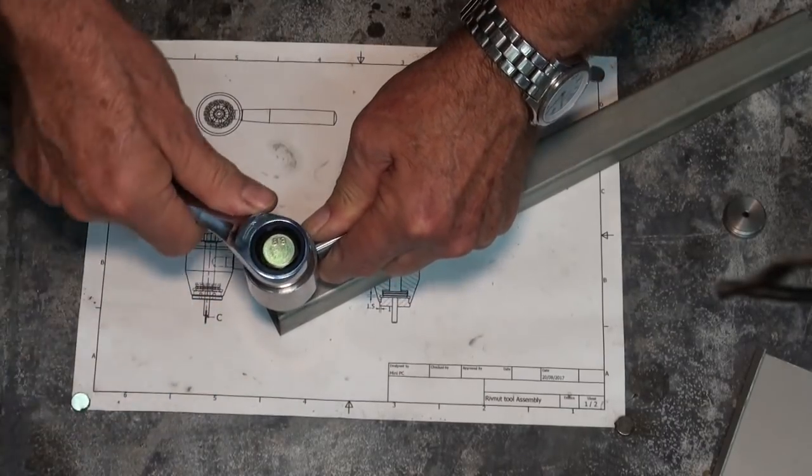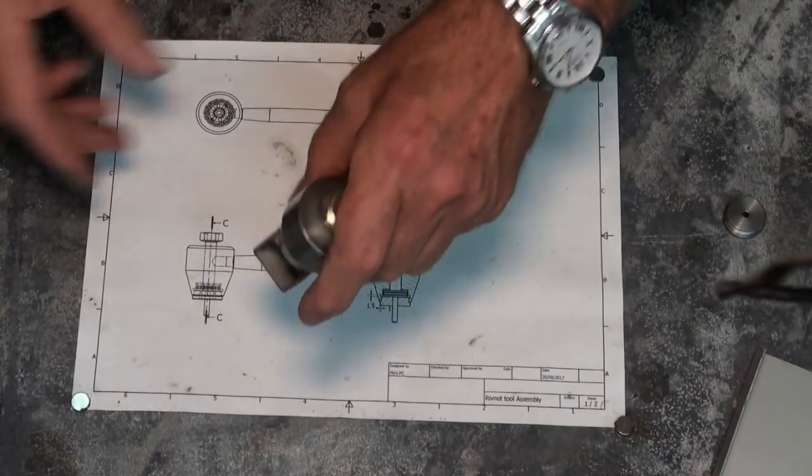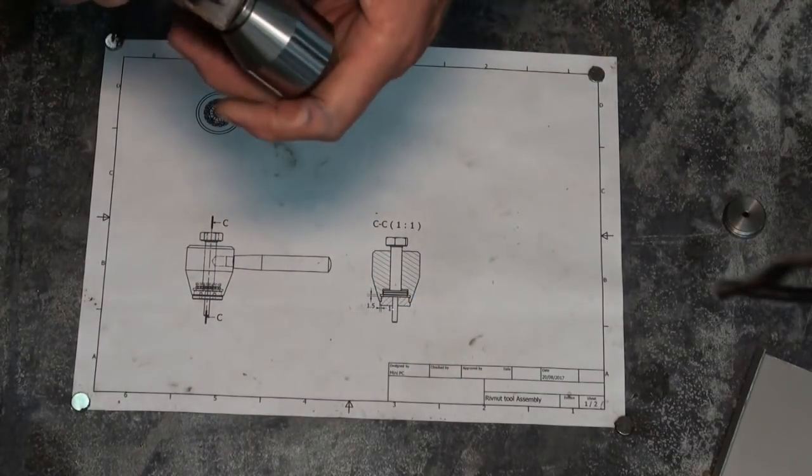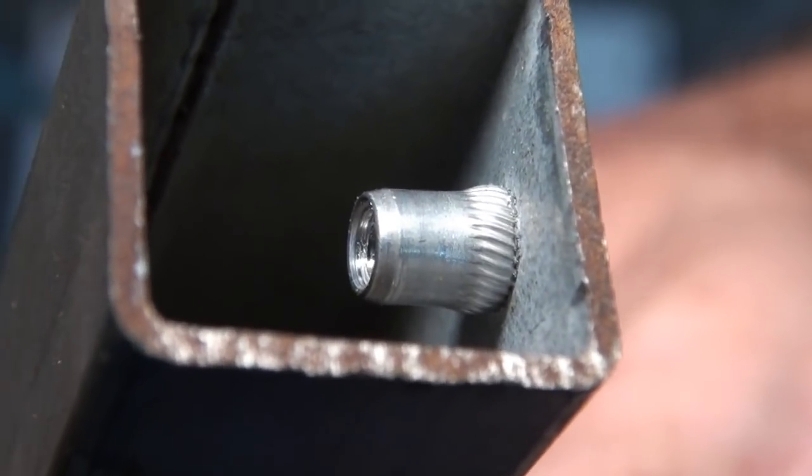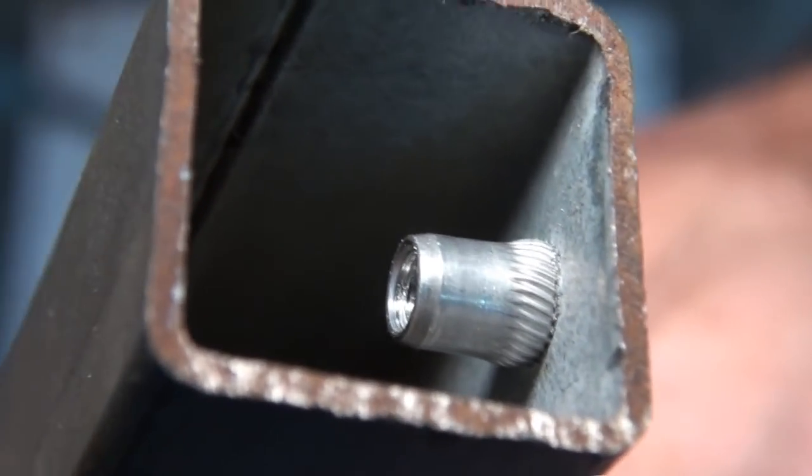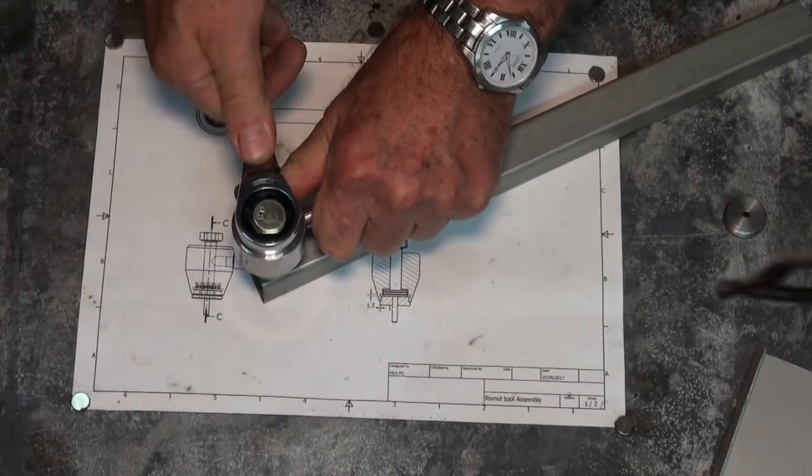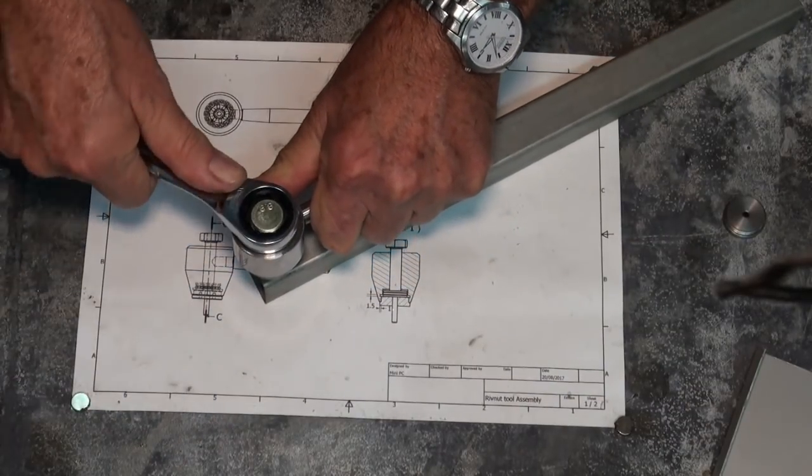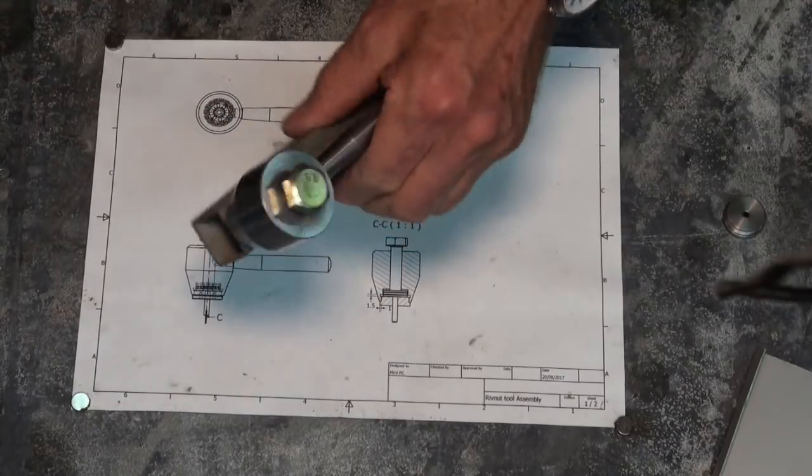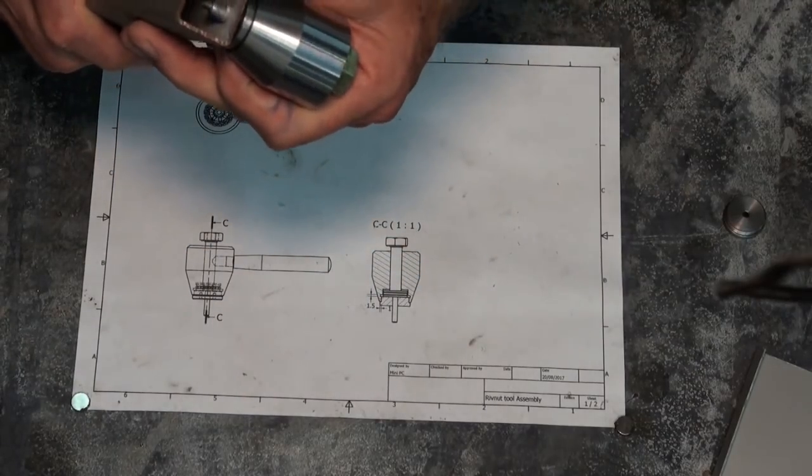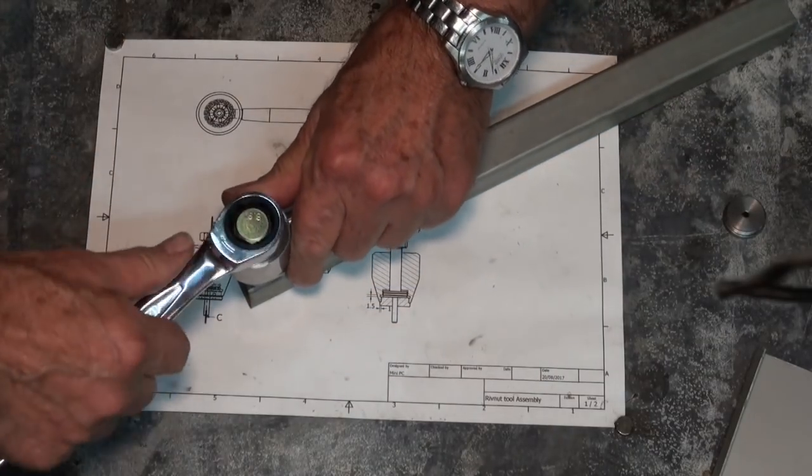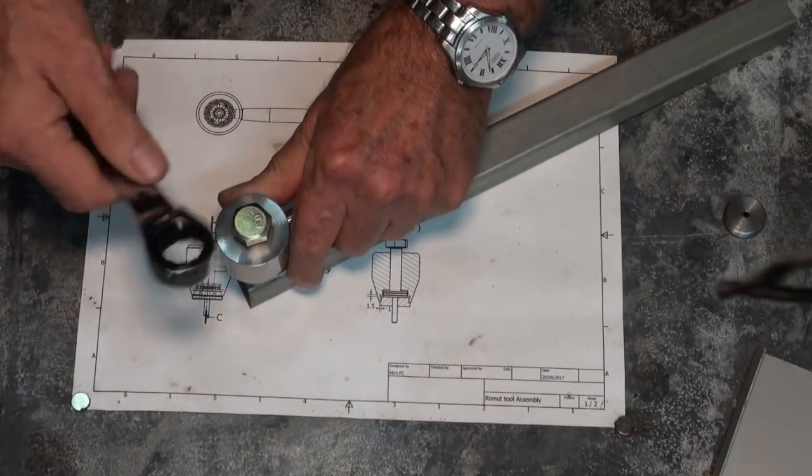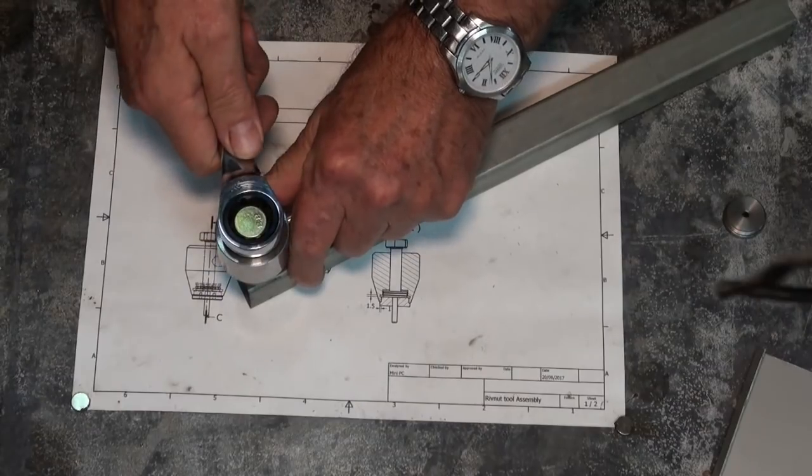And then just simply tighten it. You should be able to feel that getting tighter as you go. And when you look on the inside, you'll see a flange being formed. I'll show this in close-up. Now, it is possible to over-tighten them and strip the threads, especially on the aluminum ones. That one's sort of formed up fairly well.